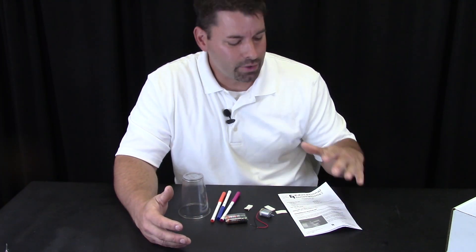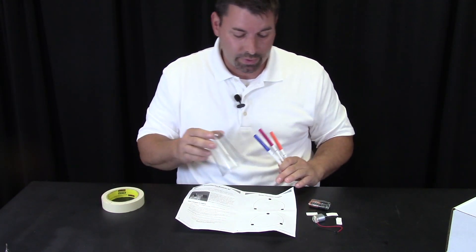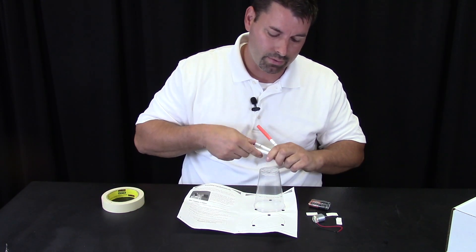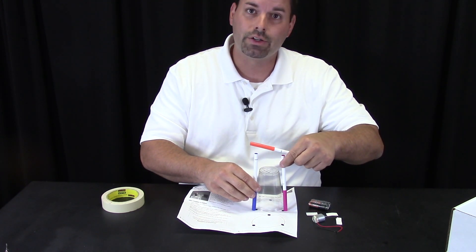The reason we love Educational Innovations so much is because their instructions are very kid-friendly and they really help you become a scientist. So to start, our directions give us a template that tells us where to attach our markers on the cup. We put the cup down and every dot on my template is where I'm going to attach the markers.